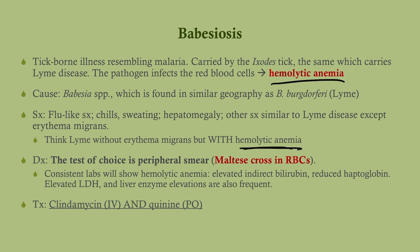With babesiosis, you'll have hemolytic anemia. A low hemoglobin on CBC should prompt further workup — check total bilirubin and related labs and you'll see a hemolytic anemia picture. The test of choice is a peripheral smear, where you'll see the 'Maltese cross' inside the red blood cells. This makes sense since babesiosis infects red blood cells, whereas ehrlichiosis involves the white blood cells.